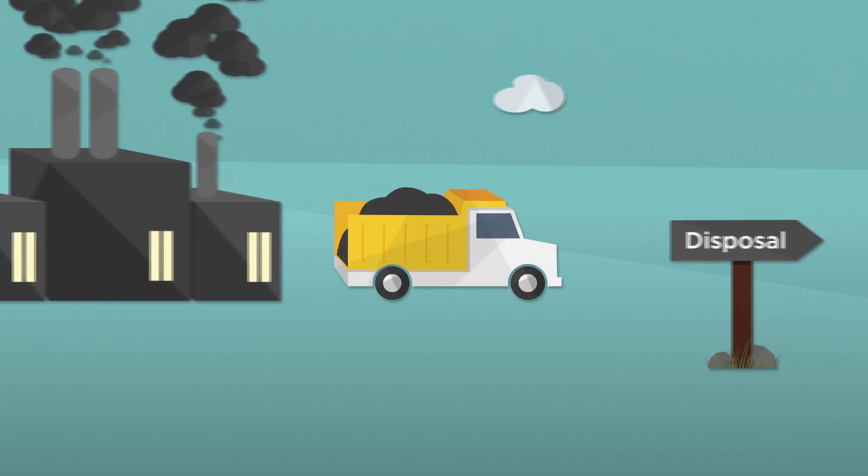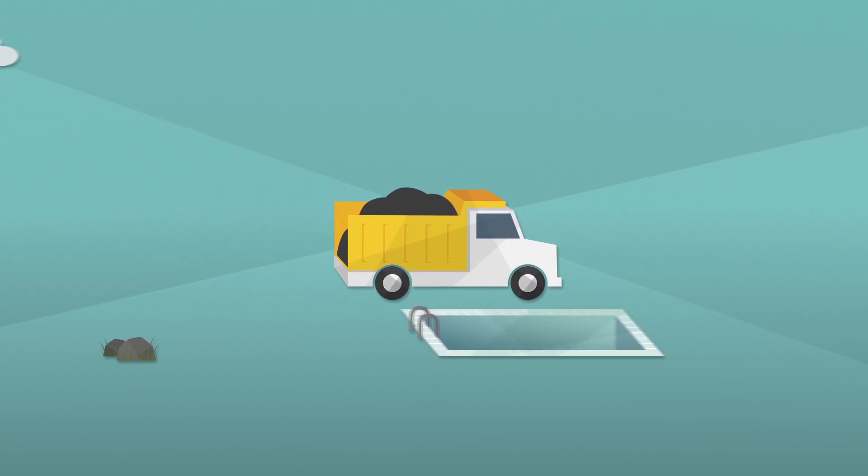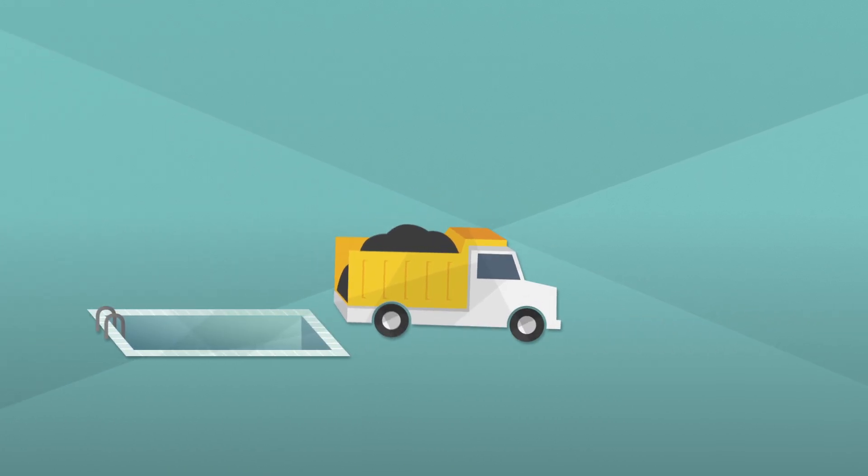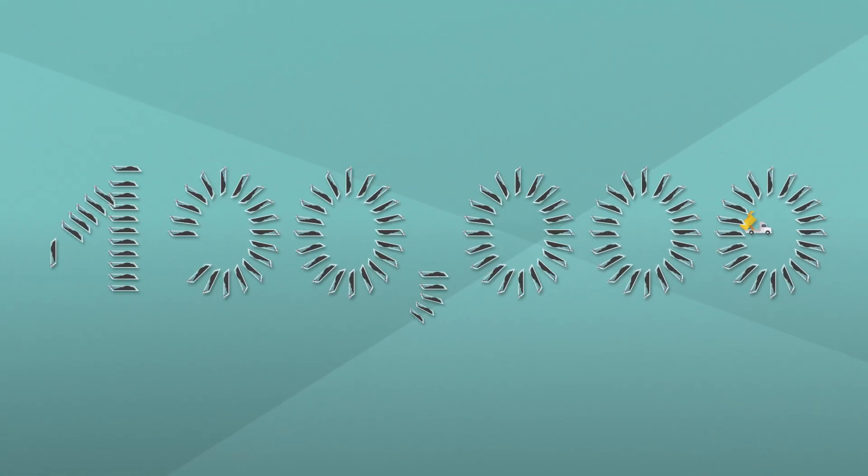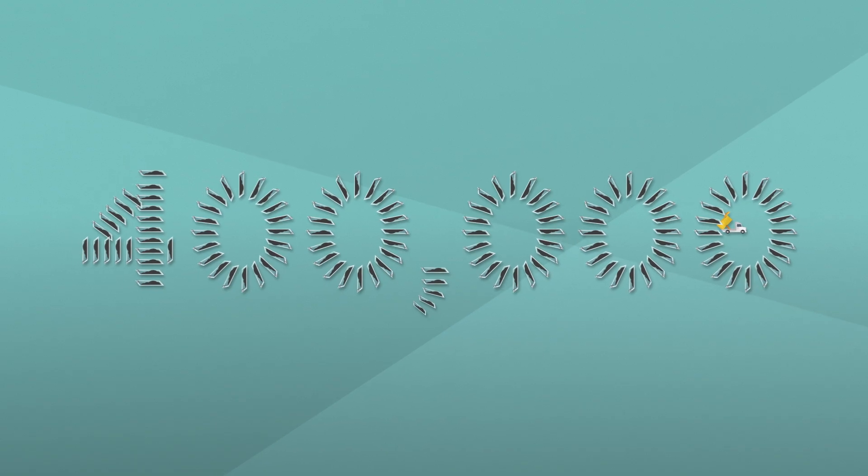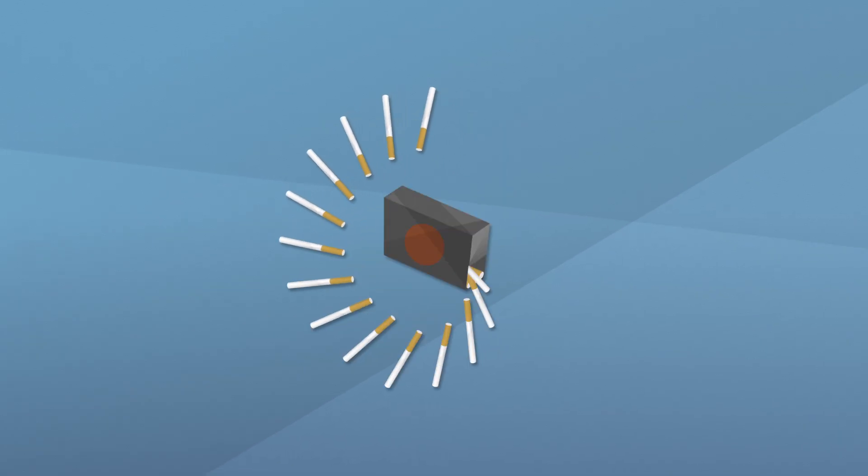Each year, coal plants generate more than 140 million tons of toxic waste called coal ash that's stored in thousands of pits across the country. Enough toxic waste to fill more than 400,000 Olympic-sized swimming pools. Living near a toxic coal ash pit can be worse for kids' health than smoking a pack of cigarettes a day.